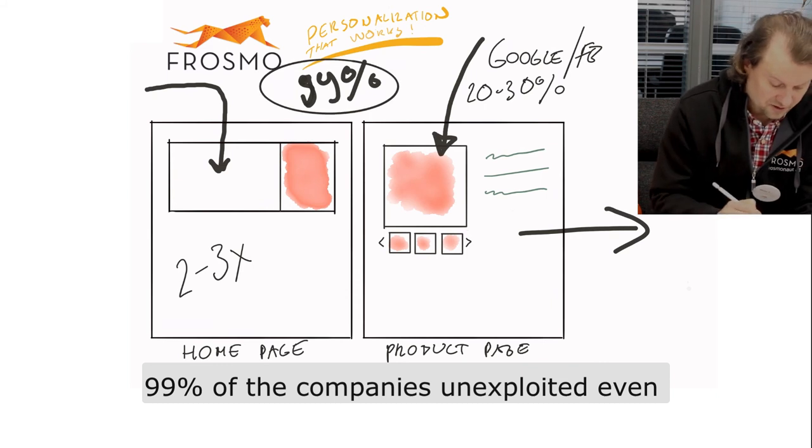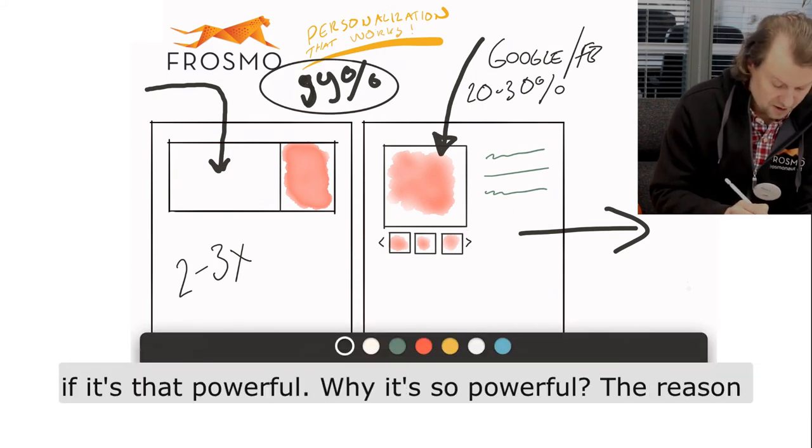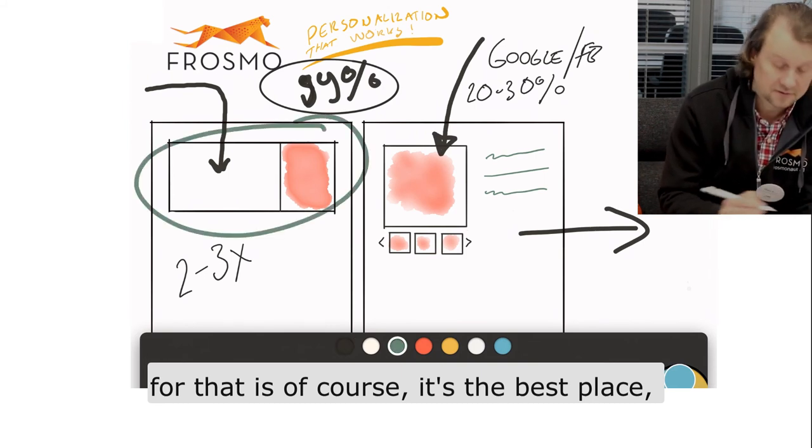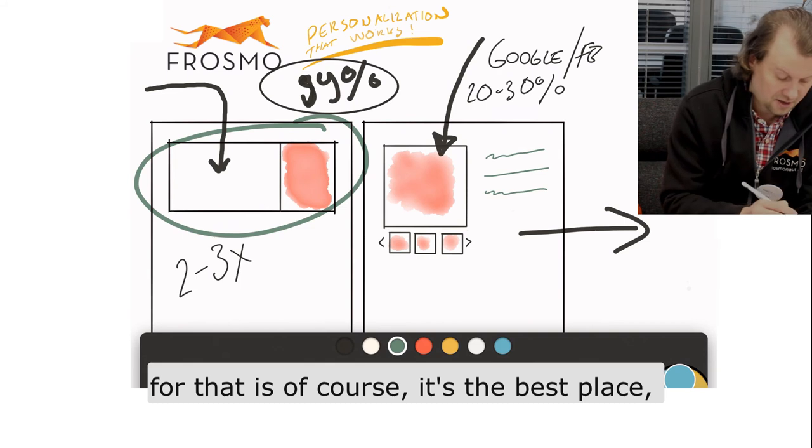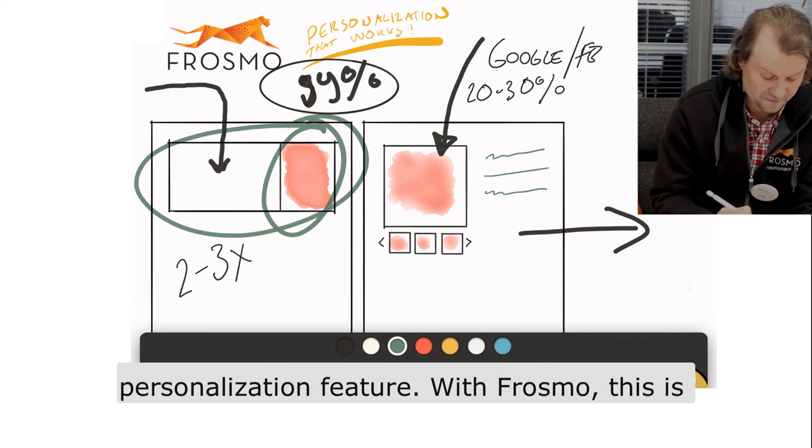99% of companies don't exploit it, even though it's that powerful. Why is it so powerful? The reason is, of course, that it's the best place and it's targeted. So, a very powerful personalization feature.